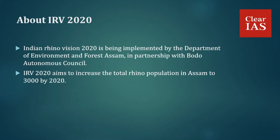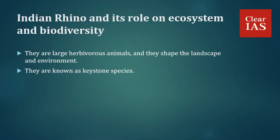Indian rhinos are large herbivorous animals that shape the landscape and environment, and hence they are known as a keystone species. By eating only certain kinds of grass and trampling on dense vegetation, rhinos affect the smaller herbivores of their area, creating a cascading effect which in turn affects other species.